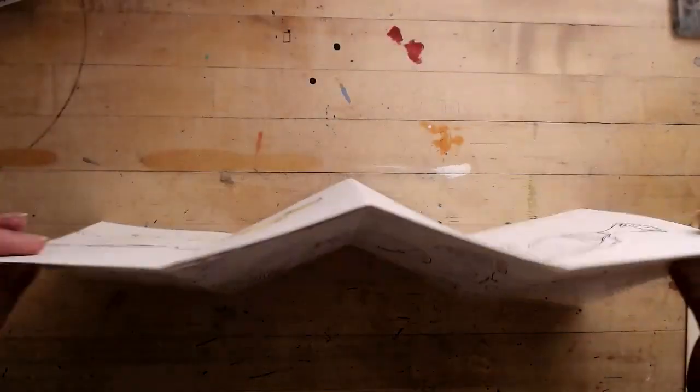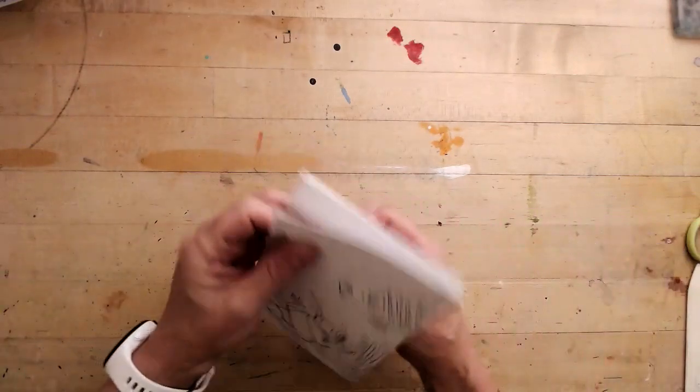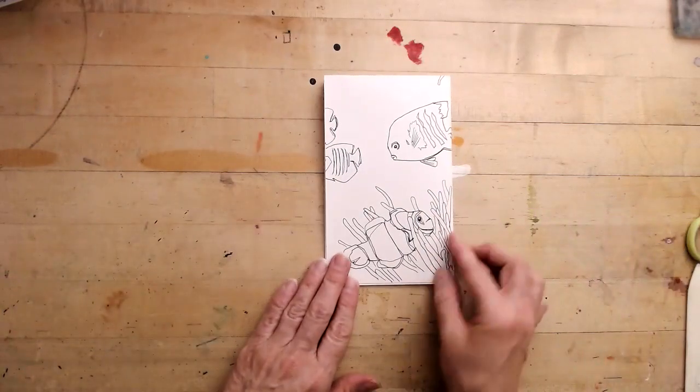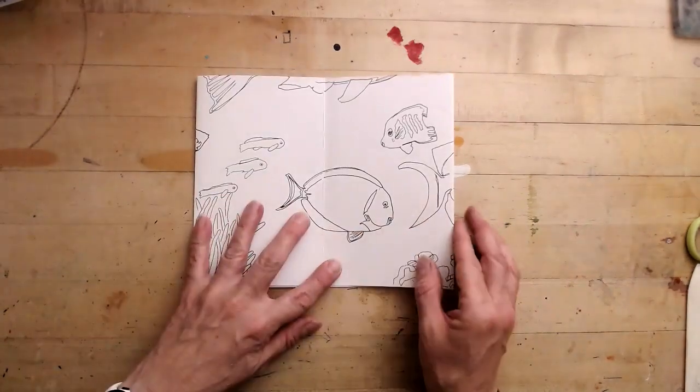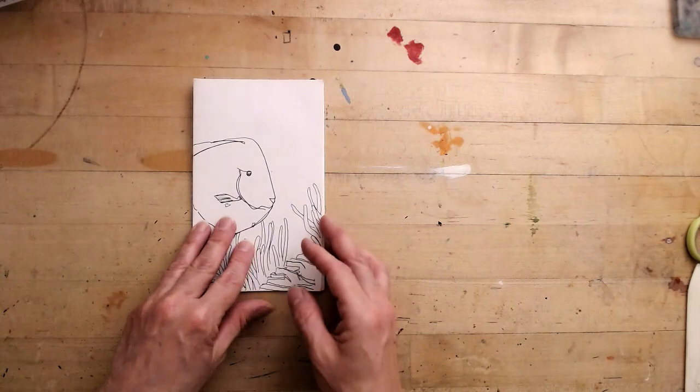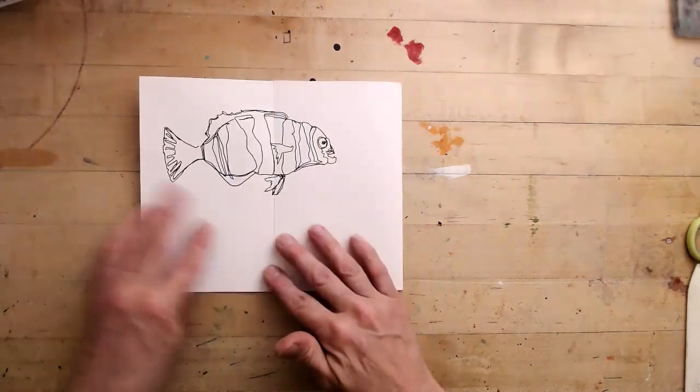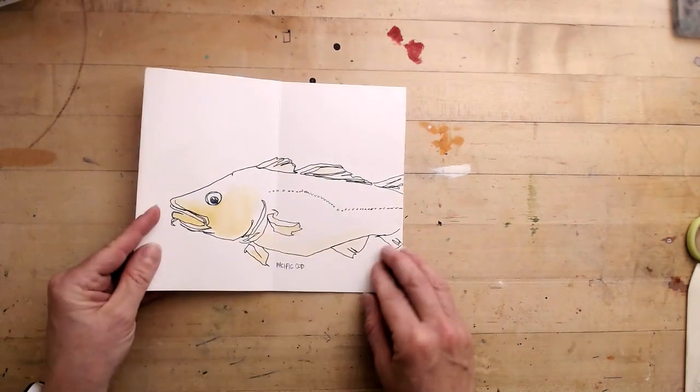When I fold it in half, I'll have a cover that opens to a spread and then a back page. And then I'll have another scene on the other side.